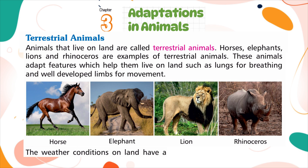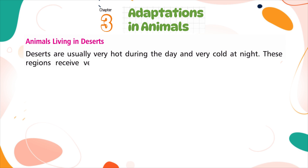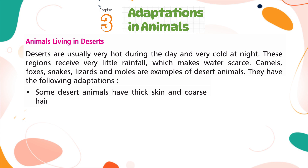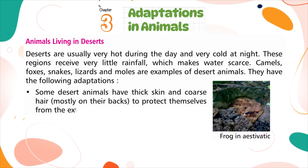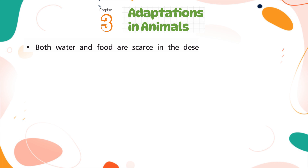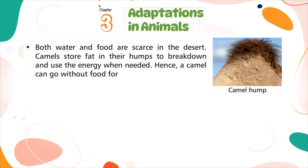The weather conditions on land have huge variations, so animals living in different landforms adapt special features. Animals living in deserts: deserts are usually very hot during the day and very cold at night, and receive very little rainfall, making water scarce. Camels, foxes, snakes, lizards, and moles are examples of desert animals. Some desert animals have thick skin and coarse hair, mostly on their backs, to protect themselves from extreme heat and cold. Some frogs and other animals go into a sleep-like state called estivation to escape the extreme heat of summer. Camels store fat in their humps to break down and use as energy when needed, allowing a camel to go without food for many days.